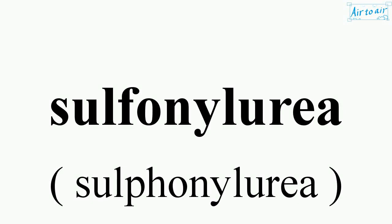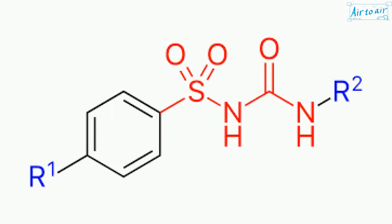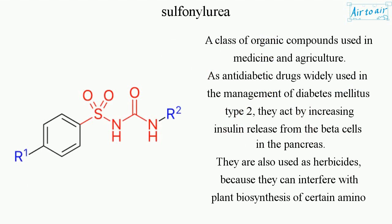Sulfonyl urea — a class of organic compounds used in medicine and agriculture, as anti-diabetic drugs widely used in the management of diabetes mellitus type 2. They act by increasing insulin release from the beta cells in the pancreas. They are also used as herbicides because they can interfere with plant biosynthesis of certain amino acids.